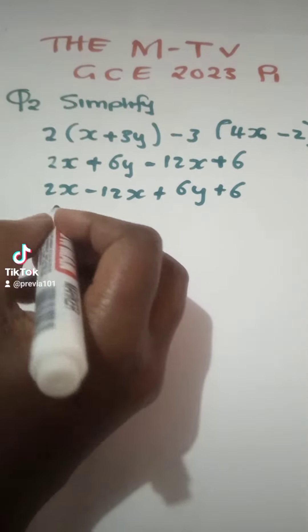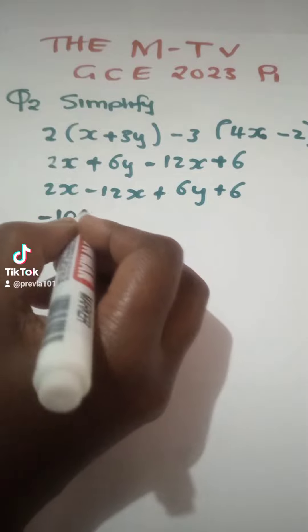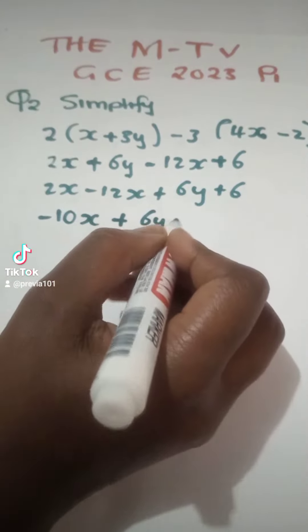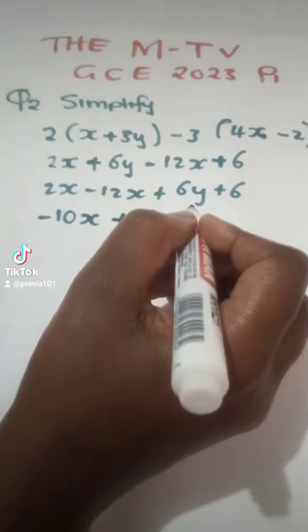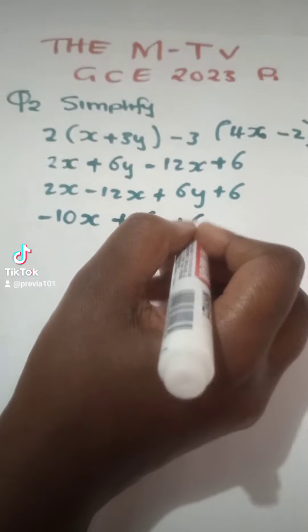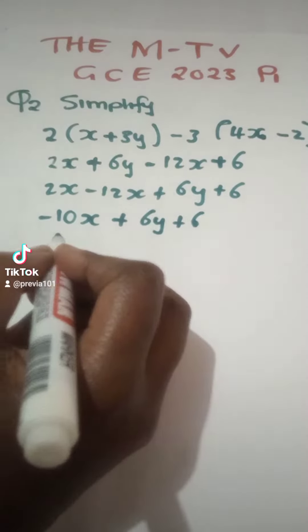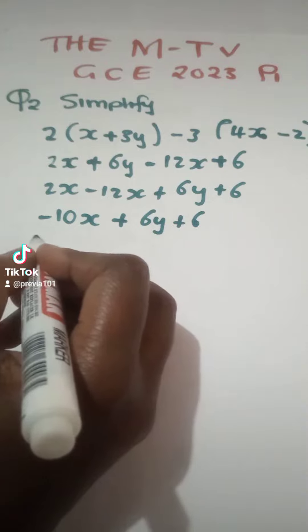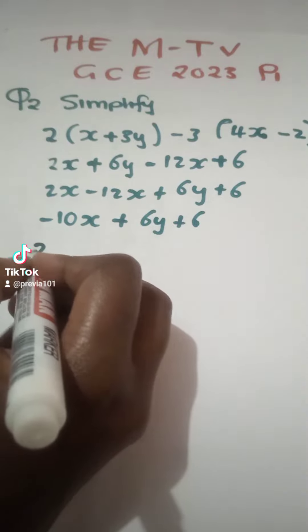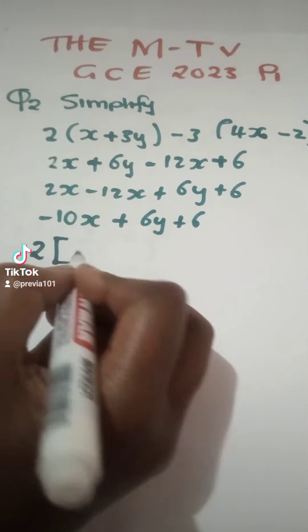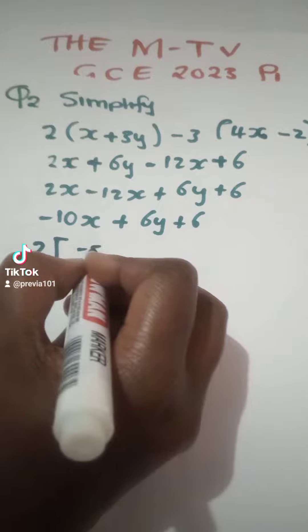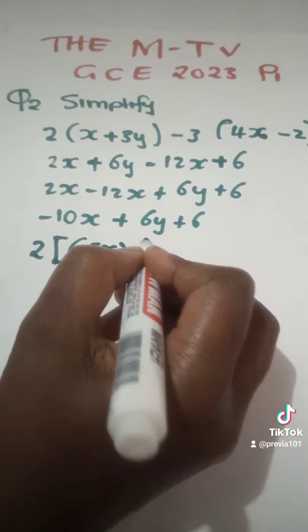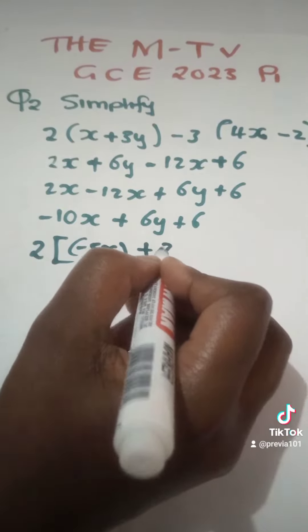That gives us negative 10x plus 6y plus 6. The common factor is 2, so we can factor it out, giving 2(-5x + 3y + 3).